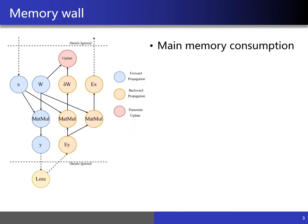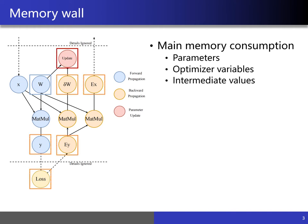As shown in the figure, the main memory consumption in deep learning training comes from four spaces: parameters, optimizer variables, intermediate values, and workspace for kernel implementations. When a model contains a larger number of parameters or is trained with a larger batch size, the larger number of intermediate results generated in the forward and backward calculations can lead to a severe memory shortage.